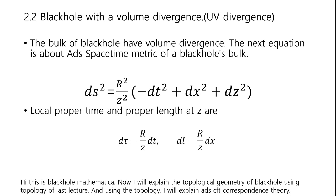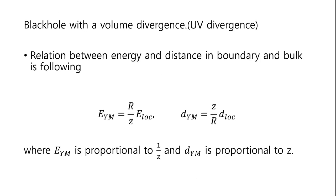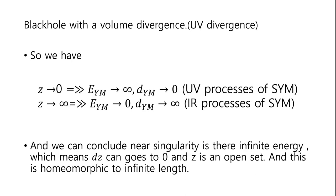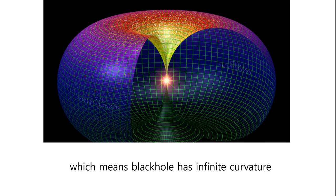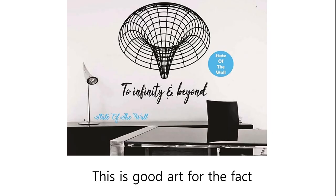Black hole with volume divergence. The bulk of a black hole has volume divergence. The next equation is about the ADS space-time metric of a black hole's bulk. Local proper time and proper length at Z are given. The relation between energy and distance in boundary and bulk is as follows: energy is proportional to 1 over Z, and distance is proportional to Z. Near the singularity there is infinite energy, which means dZ can go to 0, and Z is an open set — this is homeomorphic to infinite length. So we showed UV divergence, meaning the black hole has infinite curvature.